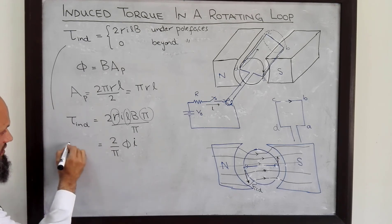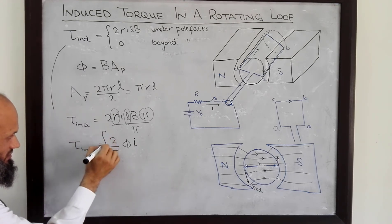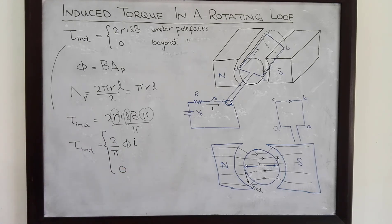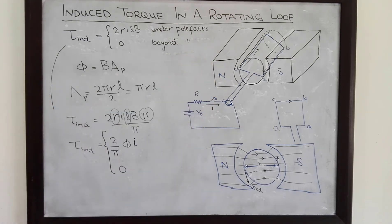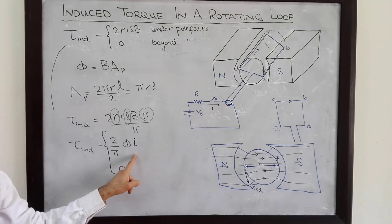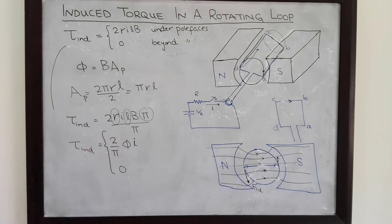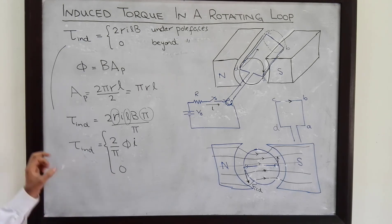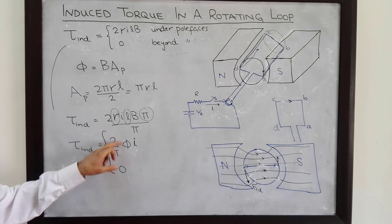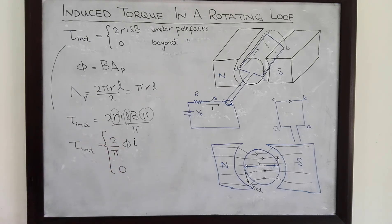When these conductors are under the pole faces, the induced torque is (2/π)φI. When conductors are beyond the pole faces, induced torque equals zero. So in this simple DC machine, induced torque depends upon the total flux in the machine, the current flowing in the machine, and a constant. The same is the situation for real DC machines — induced torque also depends upon total flux, current, and a constant which depends upon the construction of the machine.